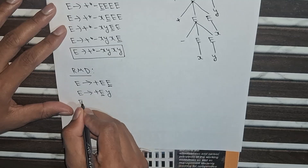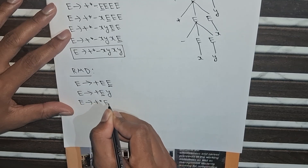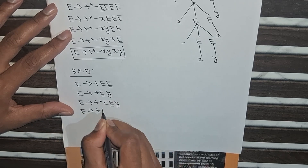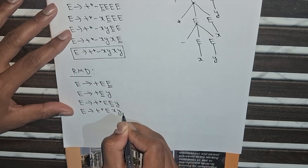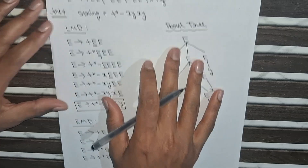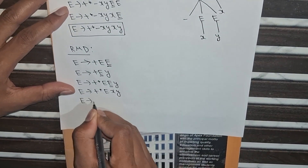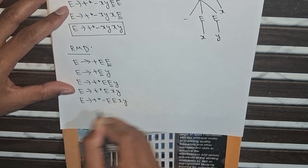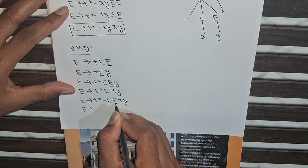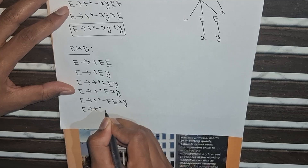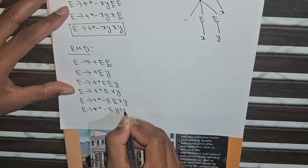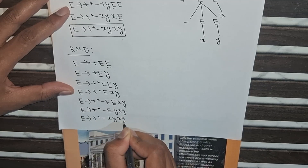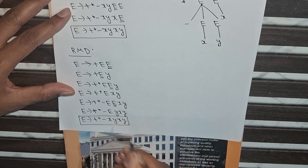So E implies +*EE and y. Again I will put from the right side: E implies +*E and xy because the second symbol from the right is x, so I will put this E as x. Now E implies +* and I will put this E as -EE: so +*-EExy. Now I will put the value of this E as y, giving +*-Eyxy. Then I put E as x: giving +*-xyxy. I got the final string which we wanted.